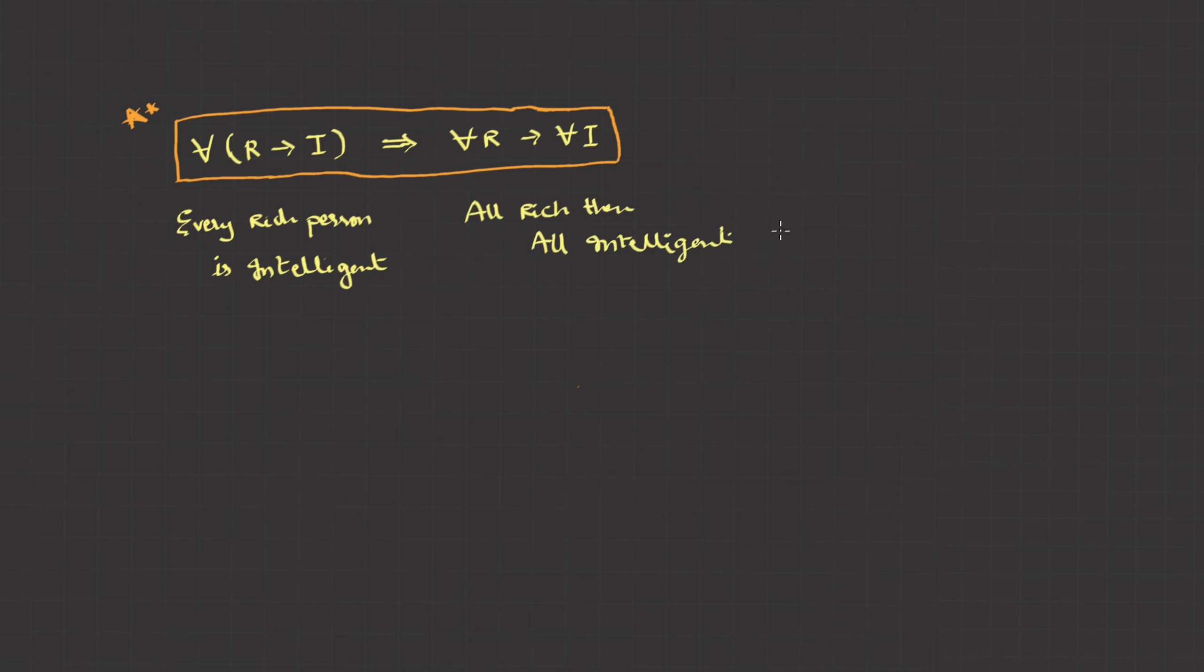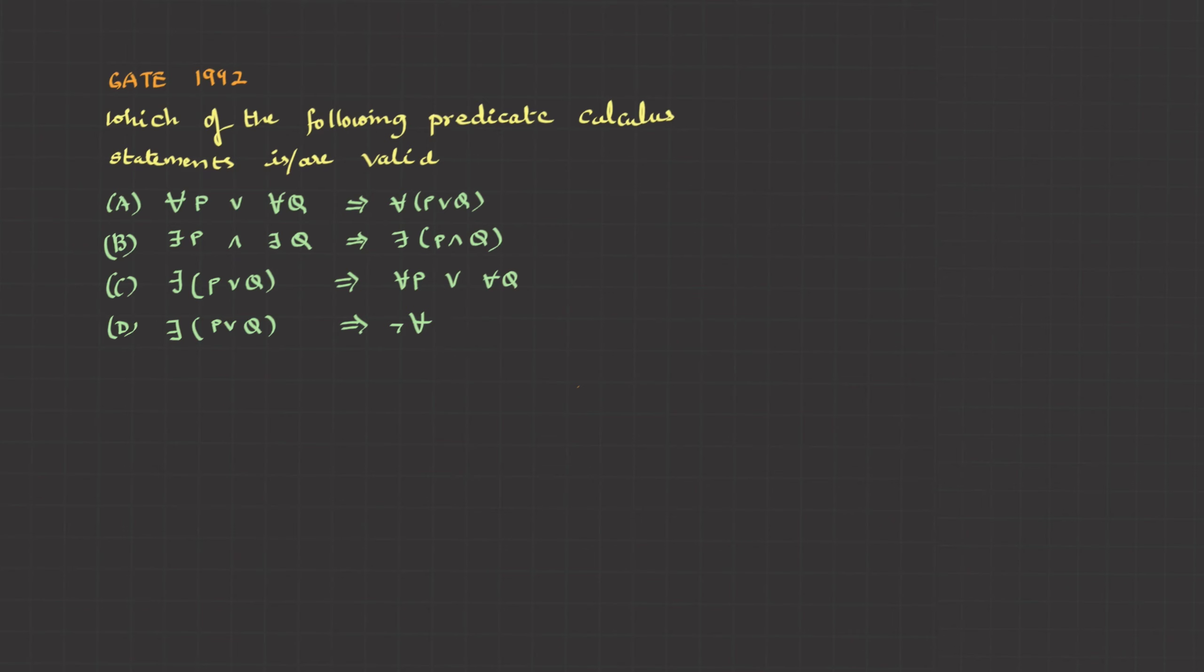Here is a question asked in GATE 1992. Which of the following predicate calculus statements are valid. Once we glance the options we can make out that first one is in the standard form. So that's the answer.